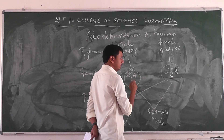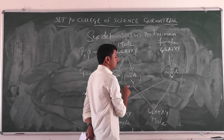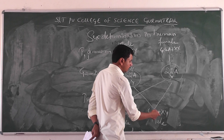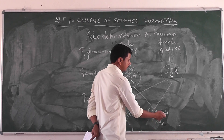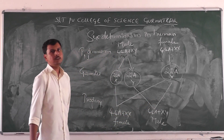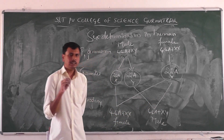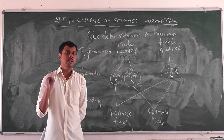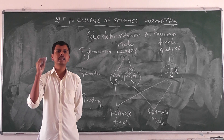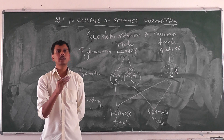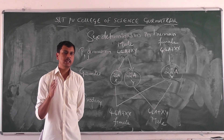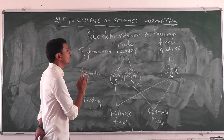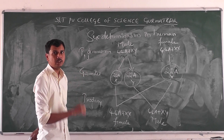If the other gamete with the Y chromosome is fused with the ovum of the female, then 44 autosomes with XY — that is a male baby. So the sex determination in human beings completely depends upon the male, because the male is the heterogametic sex. The male decides the sex of the baby — whether the baby is male or female. This is how sex determination works in human beings.